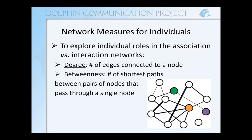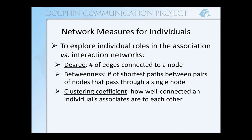Individuals with high betweenness may hold a crucial position by connecting pairs that might not otherwise be connected to each other. I also looked at clustering coefficient — how well connected an individual's associates or interaction partners are to each other. A higher clustering coefficient means that there's more redundancy in our network.